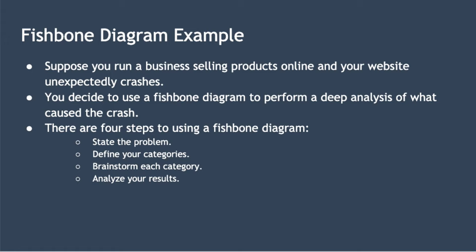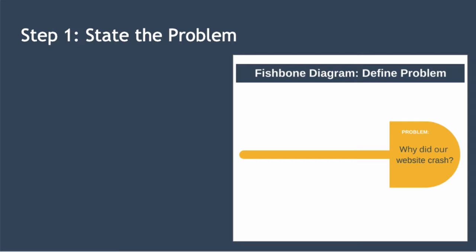There are four steps you need to follow to use the fishbone diagram. Firstly, you state the problem. Then you define your categories. Then you brainstorm each category. And finally, you analyse your results. Step one is to state the problem. The first step in the process is to state the problem you wish to remedy, and this is usually done in the form of a question. So for our example, it will be: why did our website crash? And we update the fishbone template to reflect this.